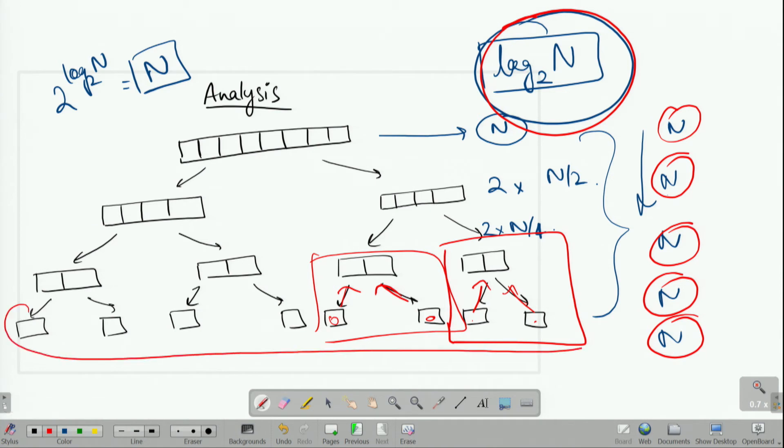So, at the lowermost level, still we need to compare all of these elements at least once. Therefore, we need to make n comparisons at this level.